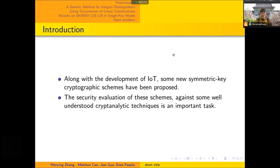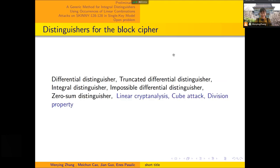Along with the development of Internet of Things, some new symmetric key cryptographic schemes have been proposed. The security evaluation of these schemes against well-understood cryptanalytic techniques is an important task. There are about eight distinguishers for block ciphers. In this paper, we focus on the first five distinguishers.